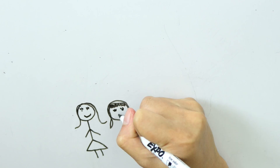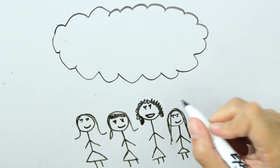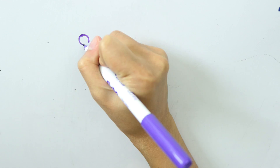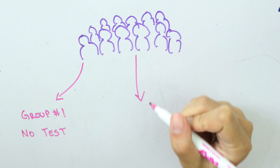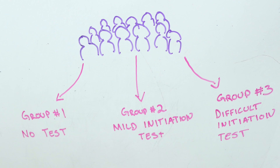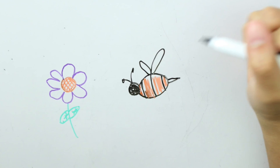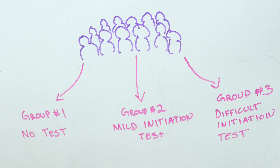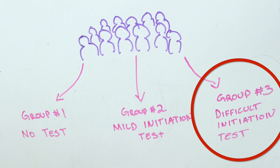In 1959, Aronson and Mills recruited female participants for a study. They were told they were going to partake in a sex discussion group. But before they could participate, they had to pass an initiation test. The participants were split into three groups: group one had no test, group two had a mild easy initiation test, and group three had a pretty difficult initiation test. After all the tests were done, they found out the sex discussion group was actually just a really boring talk about the mating cycle of bees. Then after that discussion, participants rated how enjoyable it was.